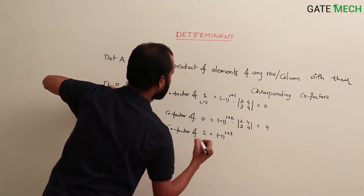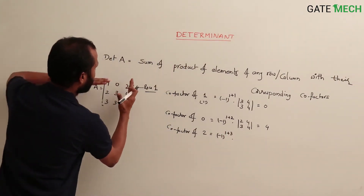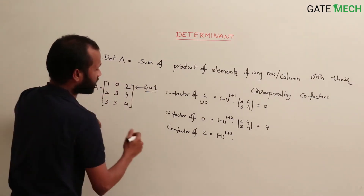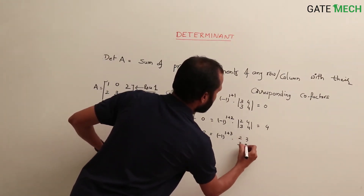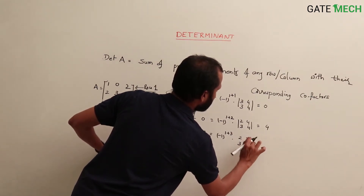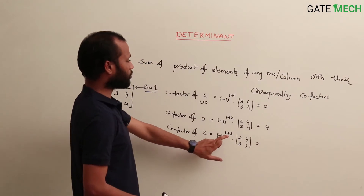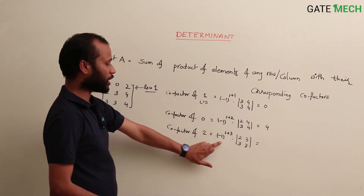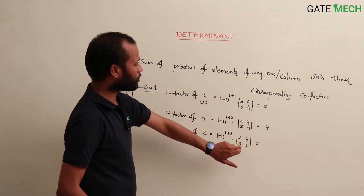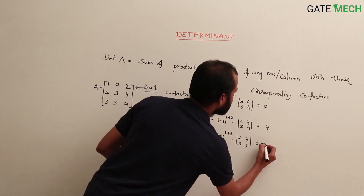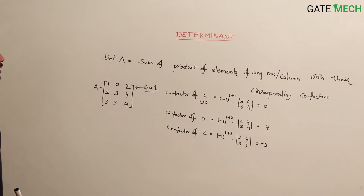The cofactor of element 2 at position (1,3) is (−1)^(1+3) times det(2 3; 3 3). That is (+1) into (2·3 − 3·3) = (+1) into (6 − 9) = −3.